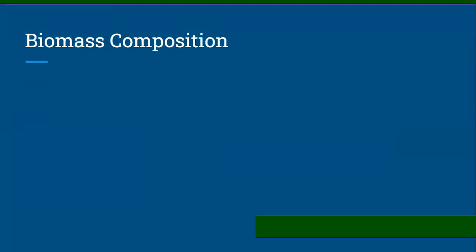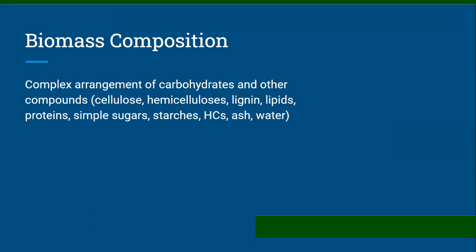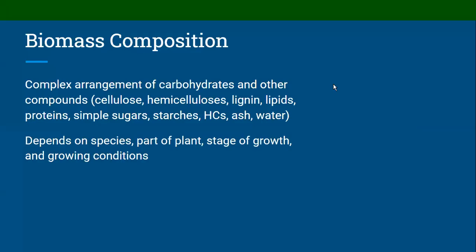For us, we're going to talk about biomass composition. Biomass is a complicated arrangement of many different types of chemicals when you break it down at the structural or atomic level. We have these basic structures: carbohydrates are the major one, along with other compounds — cellulose, hemicellulose, lignin, lipids, protein, simple sugars, starches, hydrocarbons, ash, and water. The arrangement and proportion of each depend on the type of plant — the species — and which part of the plant. With trees, the main trunk, bark, branches, and leaves all have different compositions.